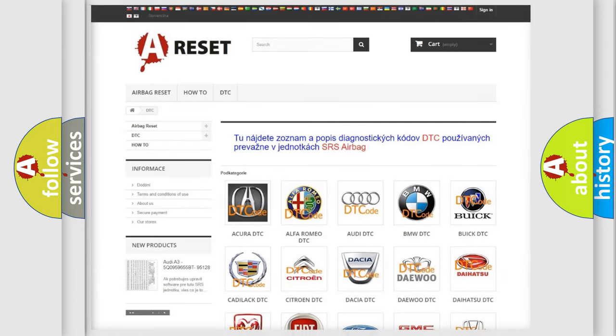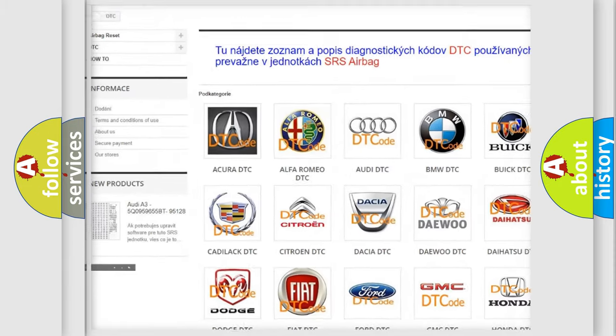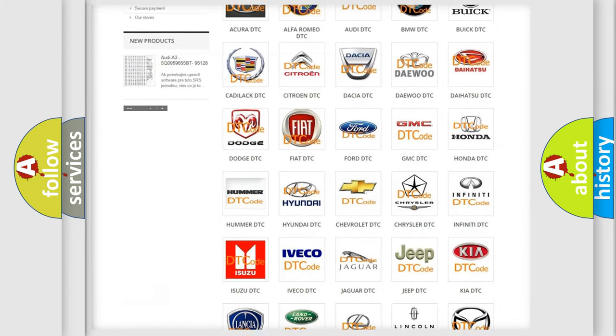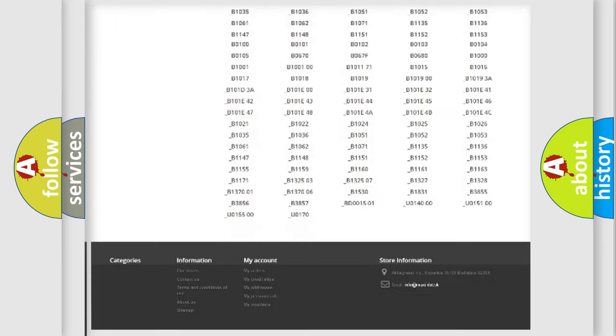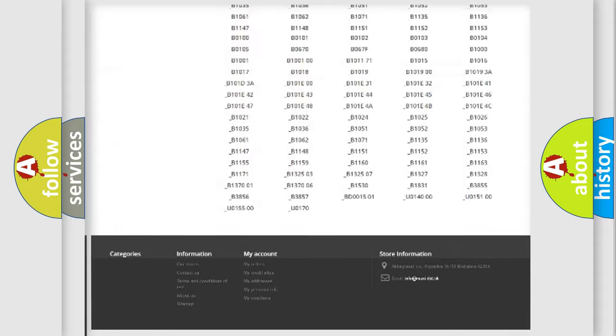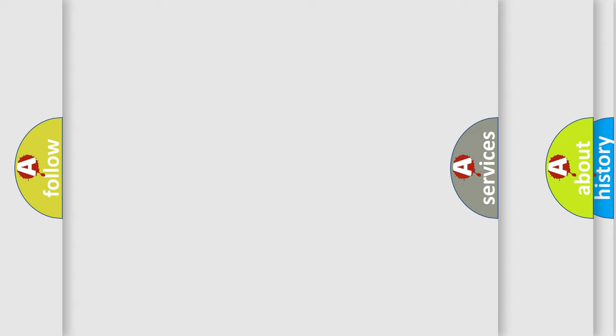Our website airbagreset.sk produces useful videos for you. You do not have to go through the OBD2 protocol anymore to know how to troubleshoot any car breakdown. You will find all the diagnostic codes that can be diagnosed in Isuzu vehicles, and many other useful things.